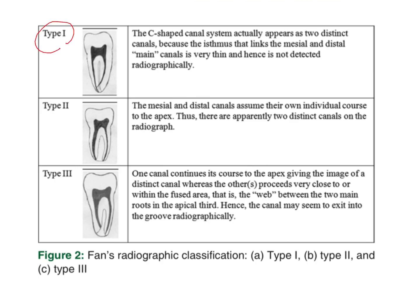Type 1 actually appears as two distinct canals — your mesial canal and your distal canal appear separate. Because there is a possibility of confluence between the distal and the mesiobuccal or mesiolingual, ideally it should look like a single canal. However, in type 1 they appear as two distinct canals because the isthmus linking the mesial and distal main canals is very thin, so it does not appear clinically distinct on the radiograph.